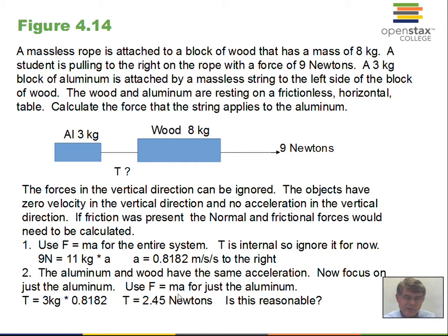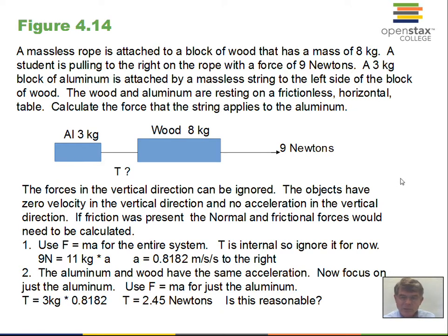Is this a reasonable result? The answer is yes — it's smaller than nine newtons. If the tension were bigger than nine newtons, that would be a problem. The nine-newton force is accelerating both objects; we need a smaller tension to accelerate just the three-kilogram aluminum object at this acceleration. Keep practicing with that and you'll get the hang of it.